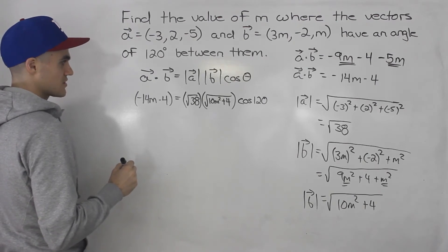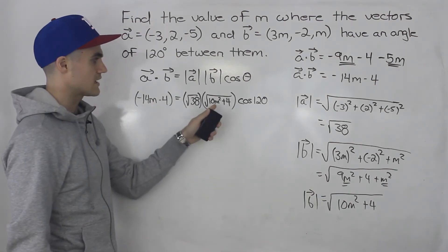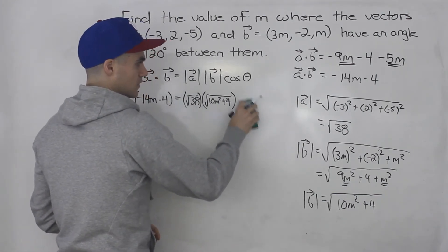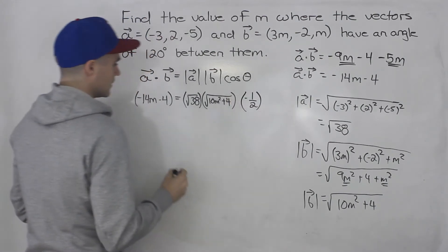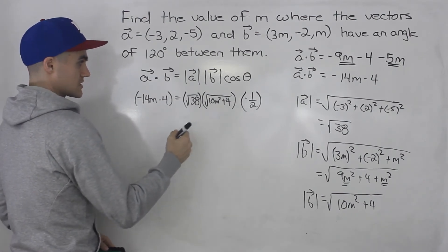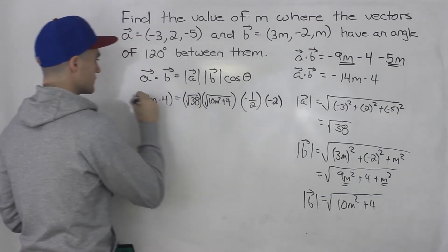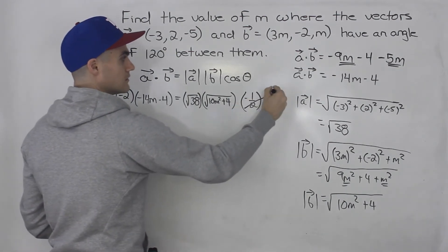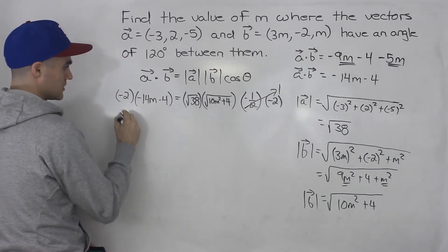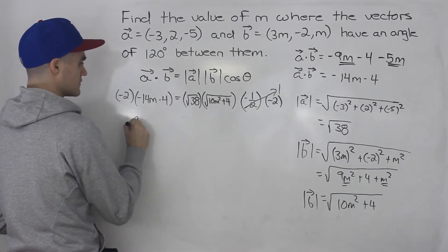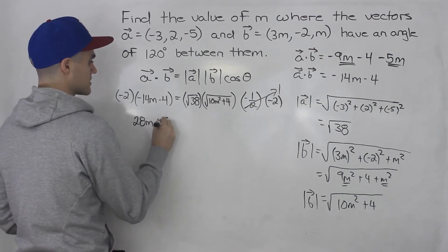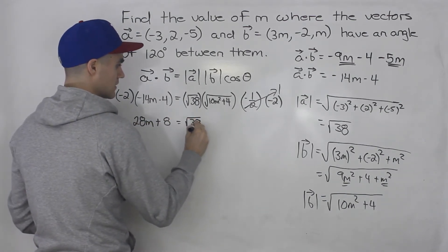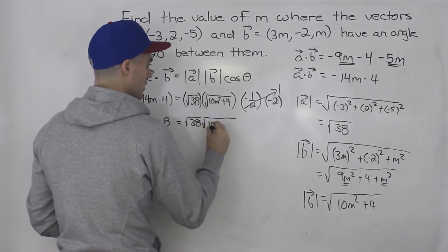Now we have to solve for m. What makes it tricky is that m is within a square root. First, cos of 120 equals negative 1 over 2. To get rid of this fraction, I'm going to multiply both sides by negative 2. So negative 1 half times negative 2 is just 1, and distributing negative 2 inside the bracket: negative 2 times negative 14m gives positive 28m, and negative 2 times negative 4 gives positive 8. So we've got 28m plus 8 equals root 38 times root of 10m squared plus 4.